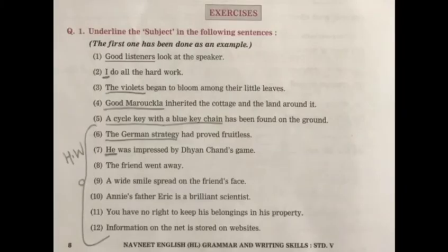'The violets began to bloom among their little leaves.' The word 'began' is showing some action — that is the verb. So with the help of 'began', we ask: who began to bloom among their little leaves? The violets. So 'the violets' is your subject and 'began to bloom' is your predicate.